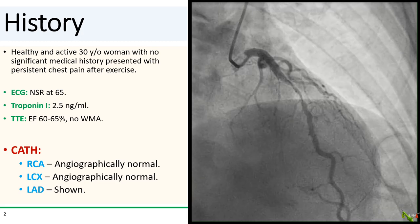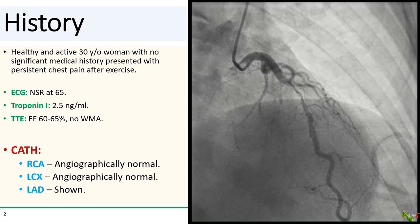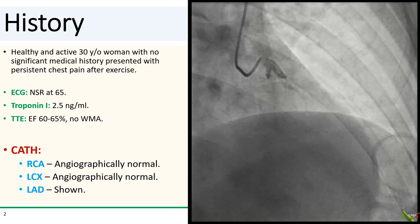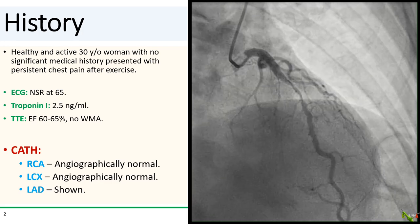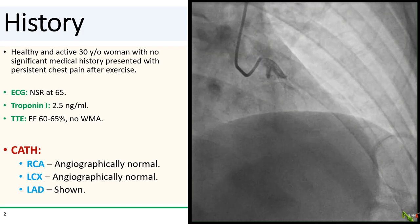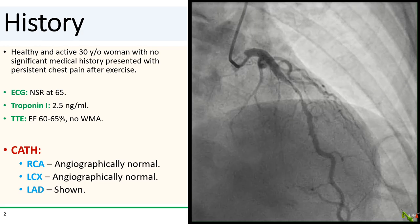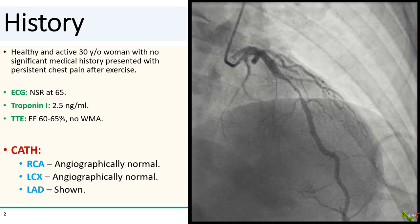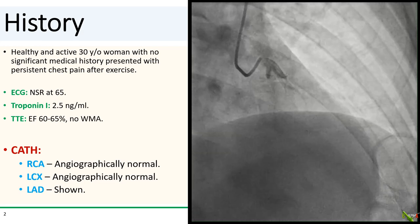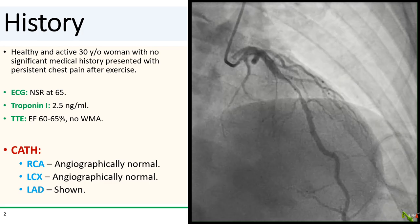On cath, her RCA and circumflex were completely normal. Her LAD is shown here. We see a clear culprit lesion in the high mid-LAD. Let's just stent this juicy lesion and be done, right?